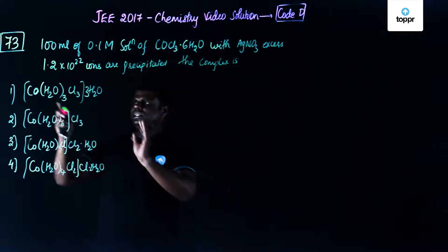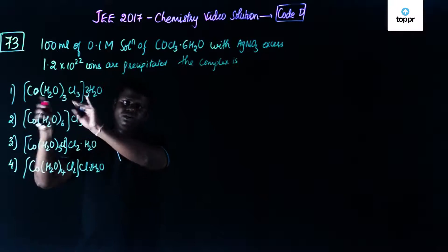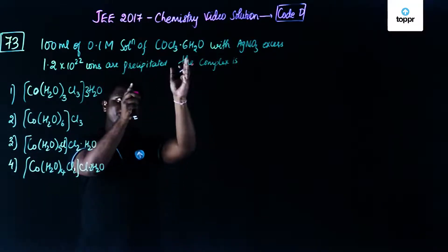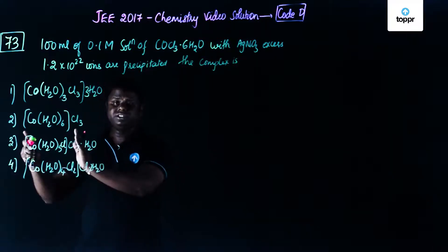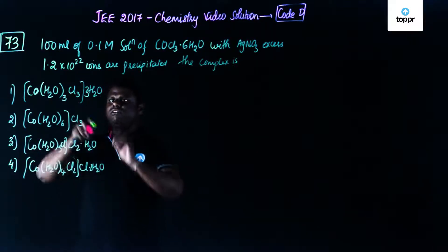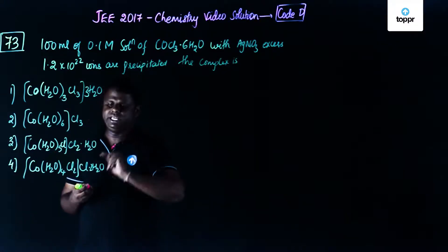So if you could see here, this is a coordination compound. Inside the coordination sphere, nothing could be getting affected. So the possibility is only when Cl is outside the coordination sphere, outside the complex bracket. So first option goes off. Now you are supposed to decide whether it should be Cl3, Cl2 or Cl.